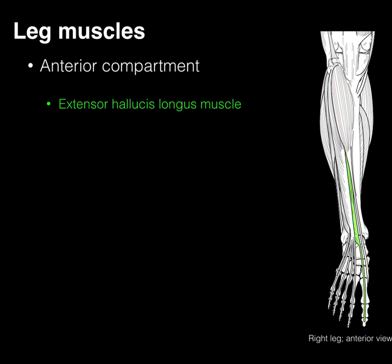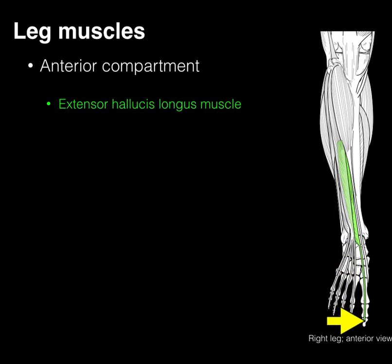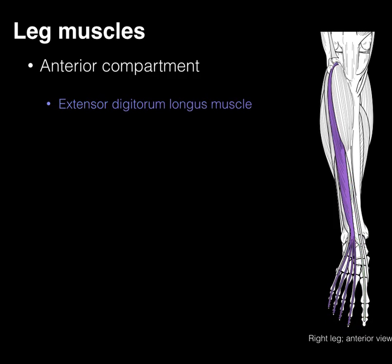The next is the extensor hallucis longus muscle. This muscle arises more laterally on the fibula, and then it courses down in front of that tibiotalar joint, where it helps with dorsiflexion, and then continues all the way down to your big toe, which is known as the hallucis, and it extends that toe. Another word for hallucis is your great toe, or digit one, and as its name implies, it's going to extend that great toe, lifting it off the ground.